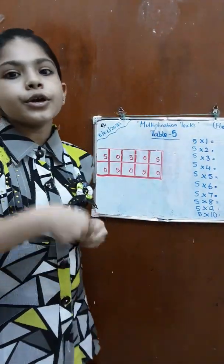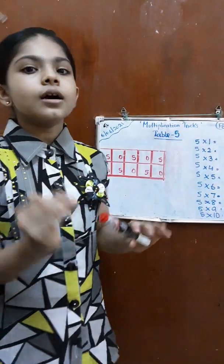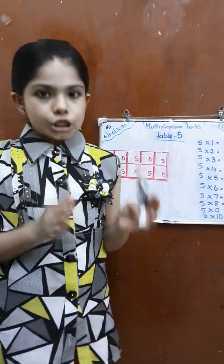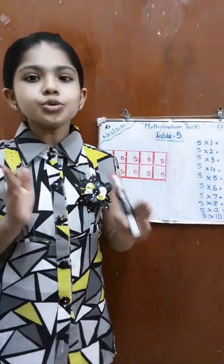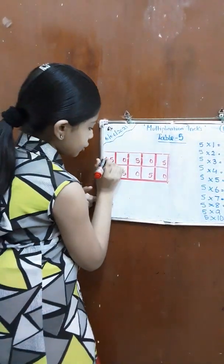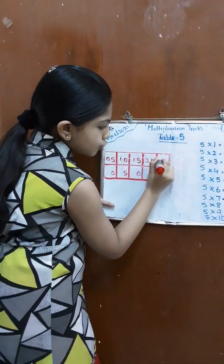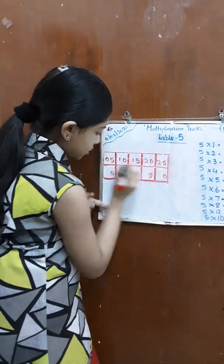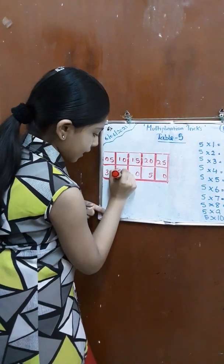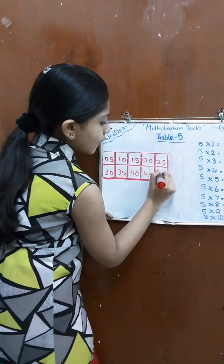After this, for the tens place, we are going to write a pattern like 0, 1, 1, 2, 2, 3, 3, 4, 4, 5. So let's write 0, 1, 1, 2, 2, 3, 3, 4, 4, 5.